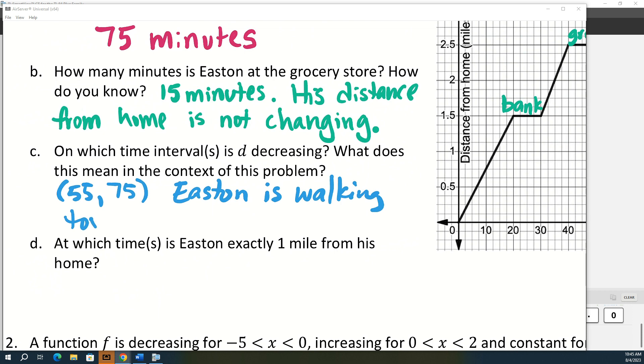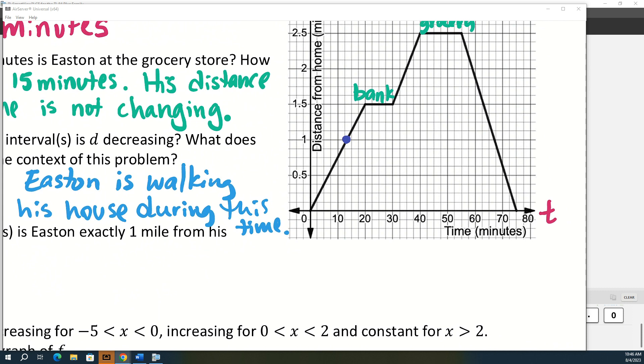And then at what time or times is Easton exactly one mile from his house? So that should be two different times, about right here and here. So this doesn't look exactly at a mark. So I'm going to say about 12 minutes and about 68 minutes.